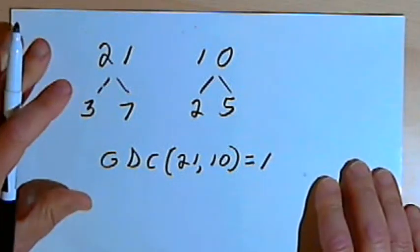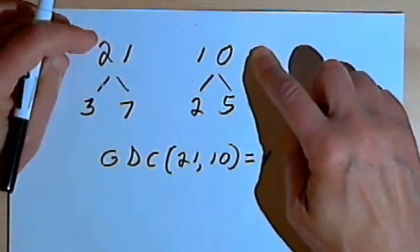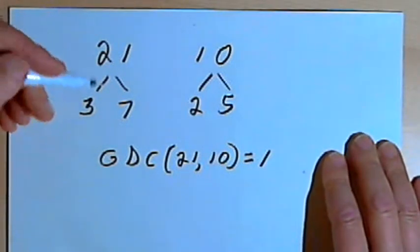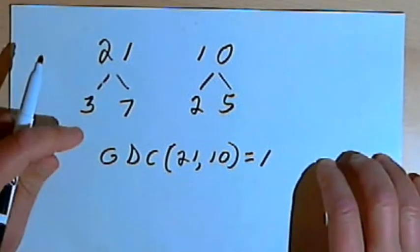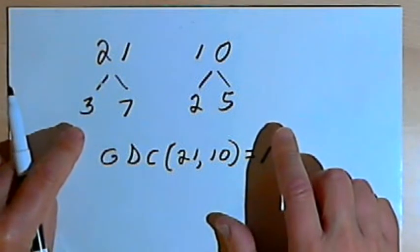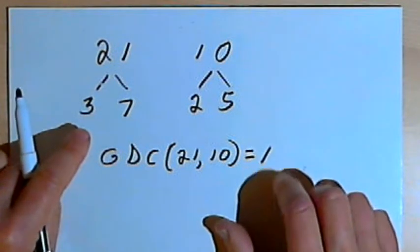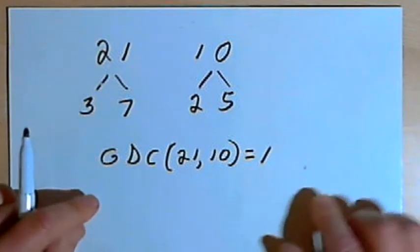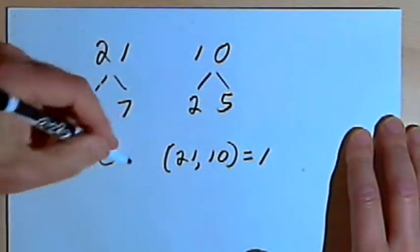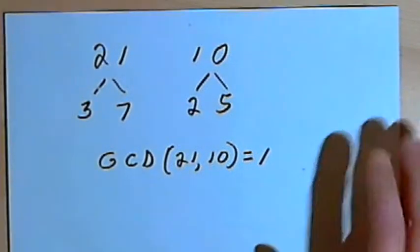So basically, that's the whole process. You take your two numbers, break them down into prime factorization, look for all the factors that are common in both of your factor trees, multiply those factors together, and that'll give you your greatest common divisor.